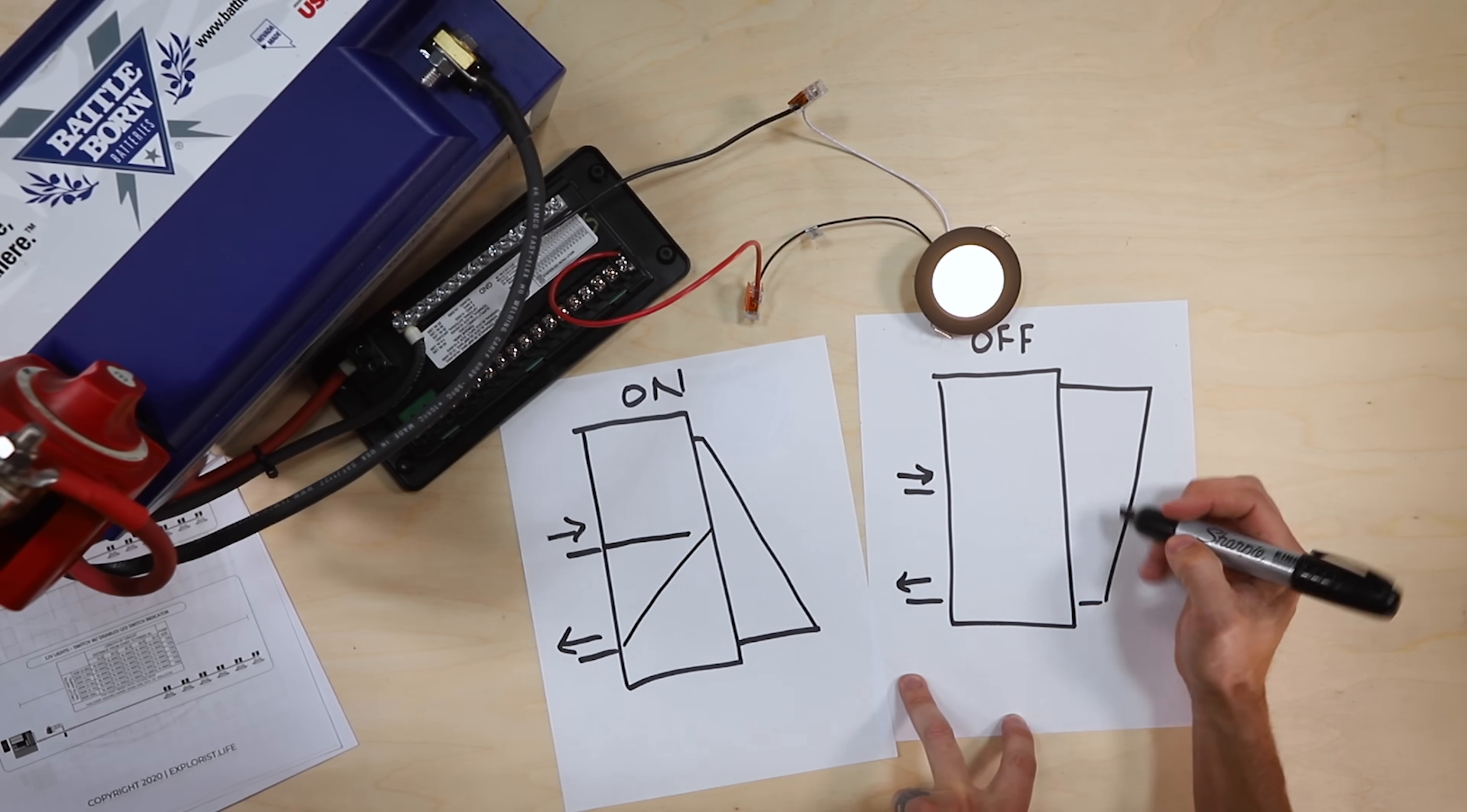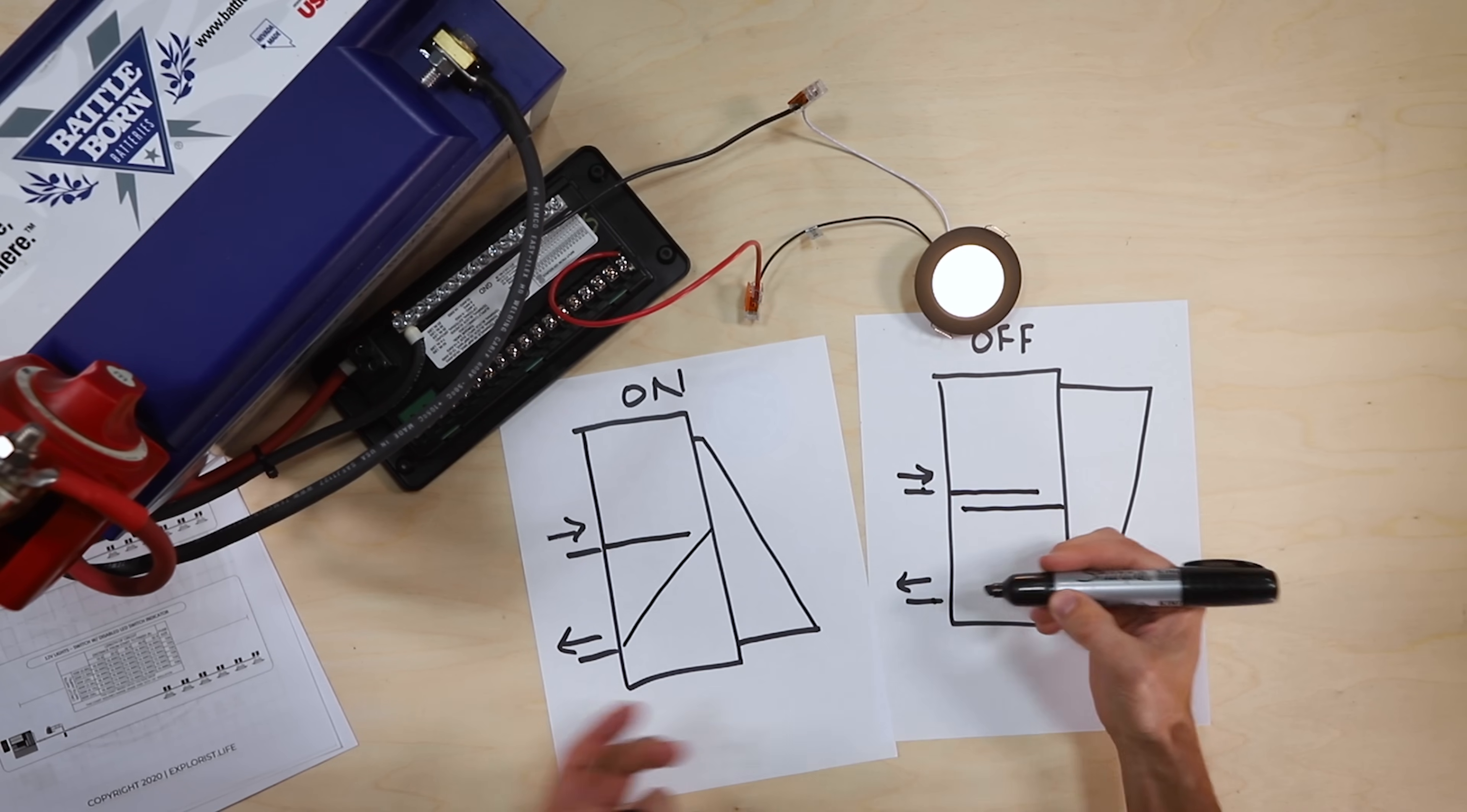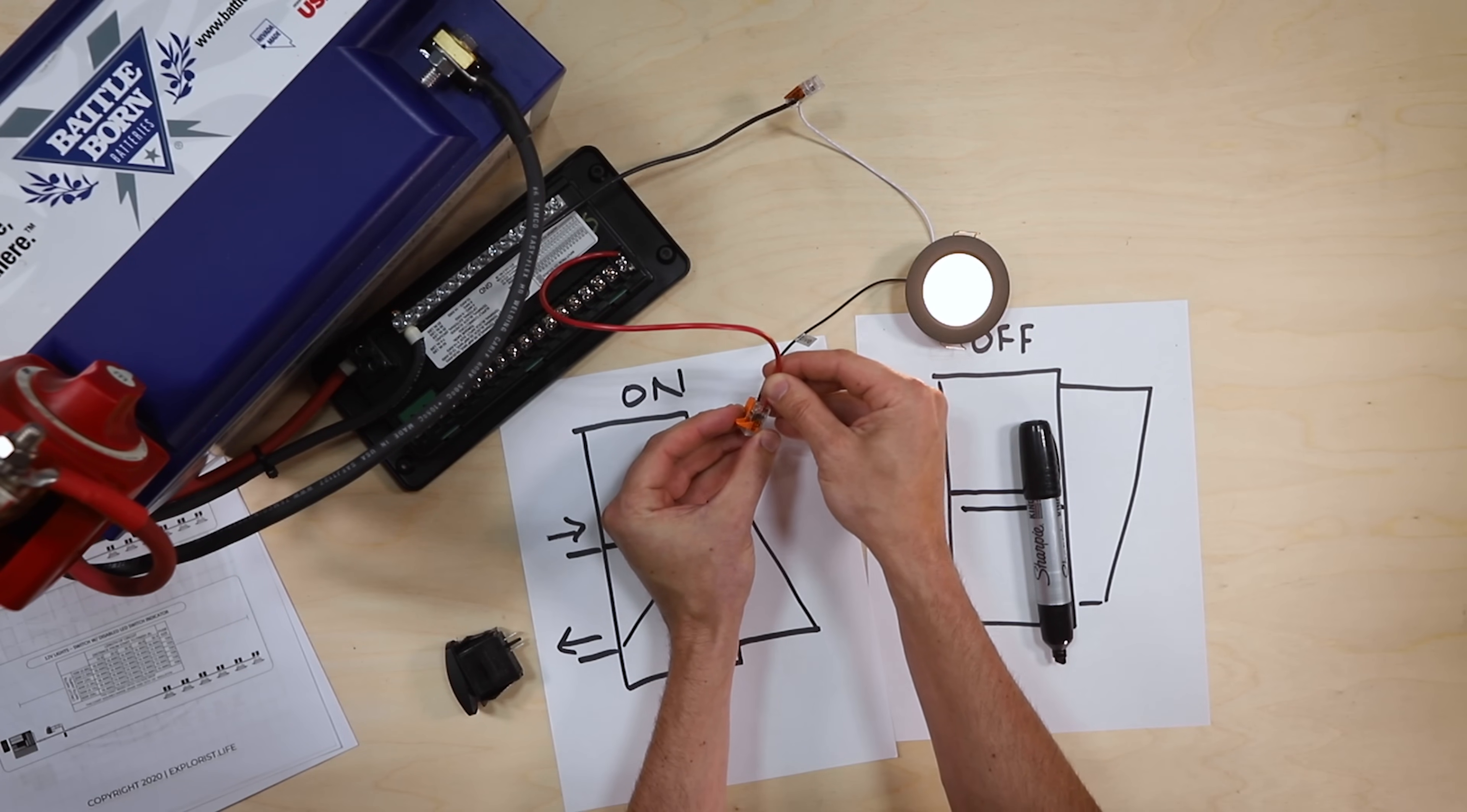And whenever the switch is in the off position, this piece of metal slides up out of the way so that this is no longer connected to this. And that's how this works. So effectively the switch is just disconnecting it and then reconnecting it, disconnecting it, reconnecting it on the positive side.